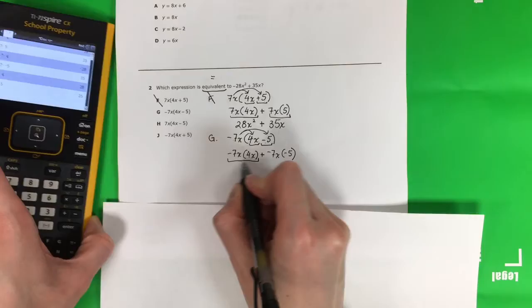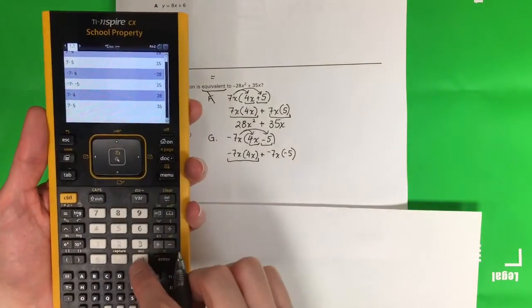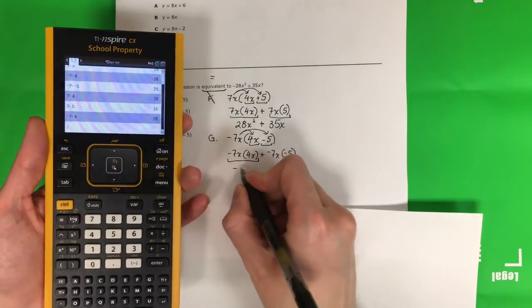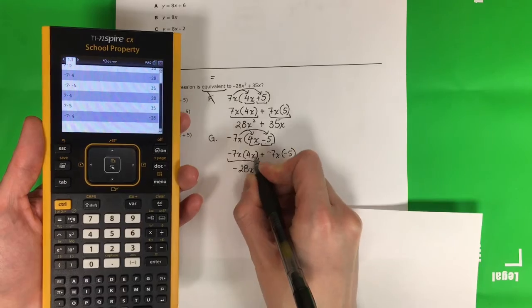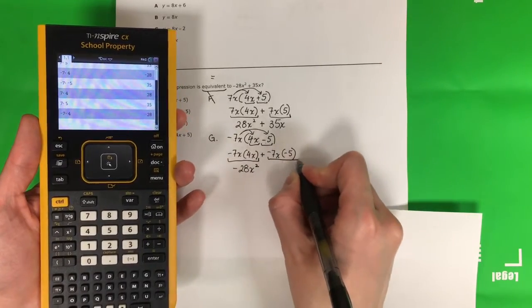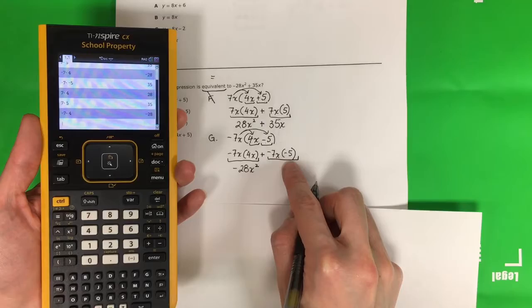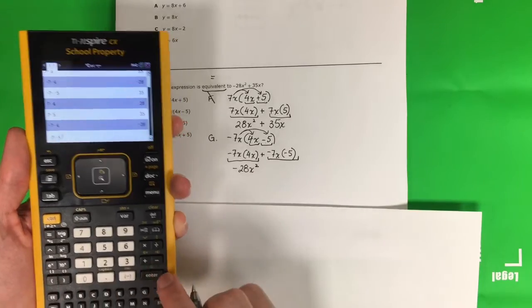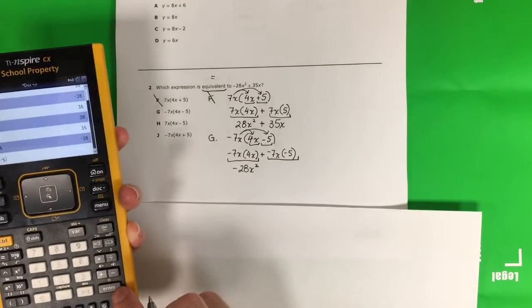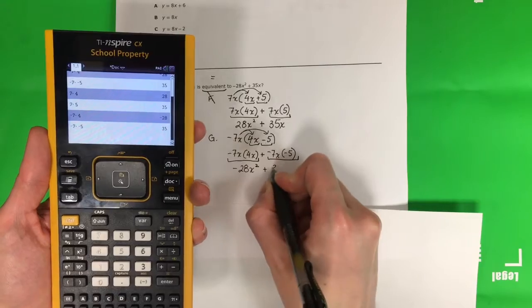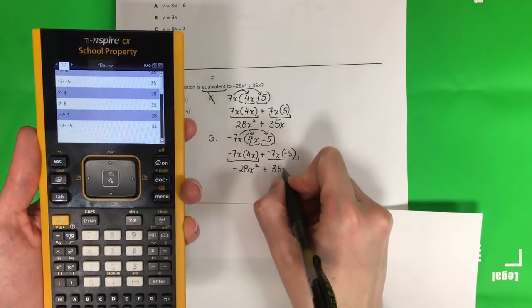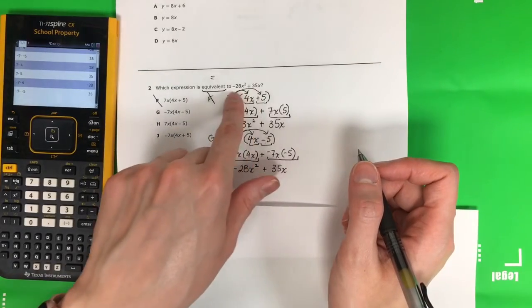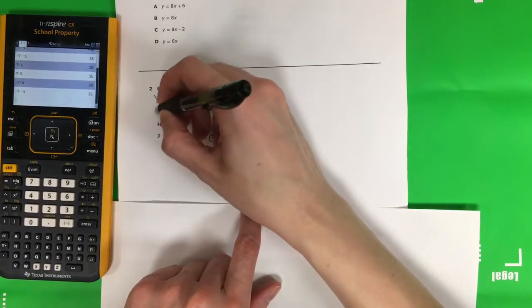In the calculator we put negative 7 times 4, which gives negative 28. Copy x — there are two x's, so squared. Now negative 7 times negative 5 gives a positive 35x. Is this expression equivalent to this expression? Yes. So my answer is g.